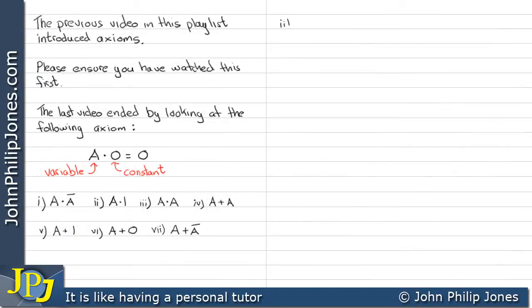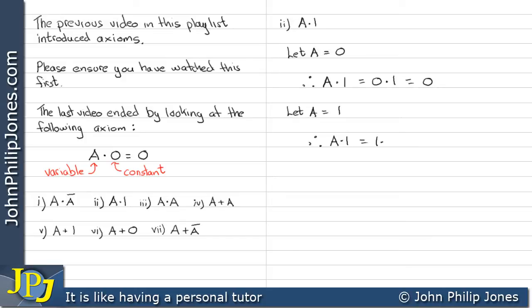Let's look at the second example, which is A AND one. Now let's make A equal zero. Therefore A AND one is zero AND one, which gives us a zero. Let's make A equal one. Therefore A AND one will be one AND one, which when we AND gives us a one.